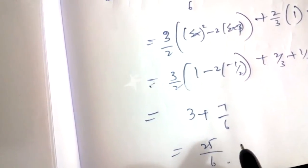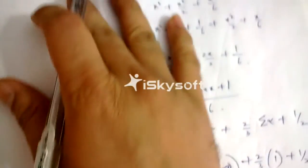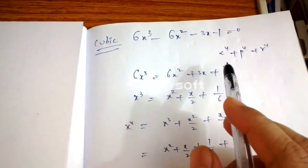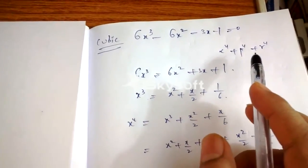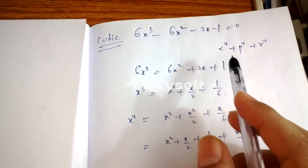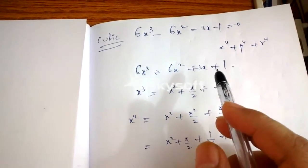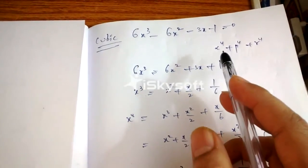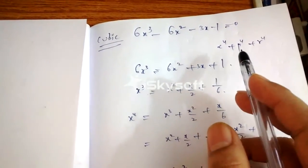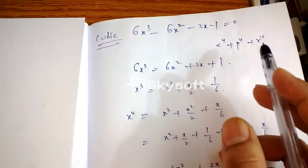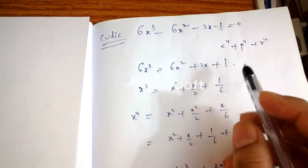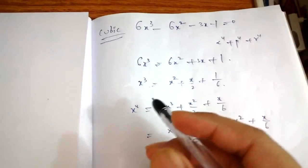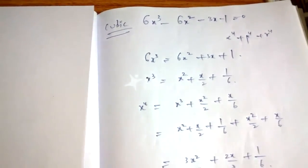Simplifying everything: (3/2)(1 − 2×(−1/2)) + 2/3 + 1/2 gives 3/2 × 2 + 2/3 + 1/2, which equals 3 + 7/6 = 25/6. So this is the way to find the value of α⁴ + β⁴ + γ⁴. Similarly, we can find α⁵ + β⁵ + γ⁵, which we will discuss in the next tutorial. Thank you.